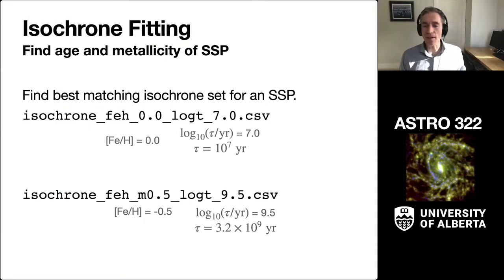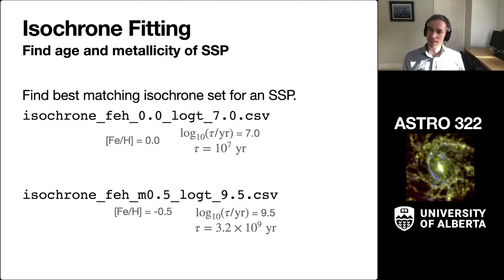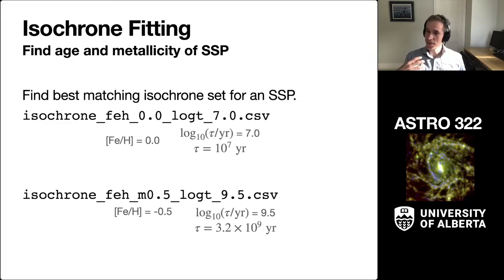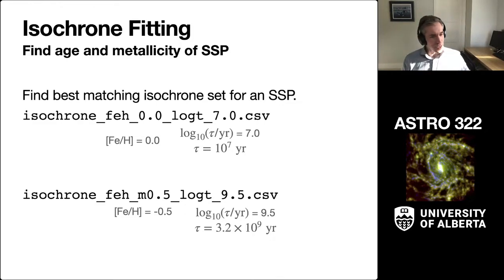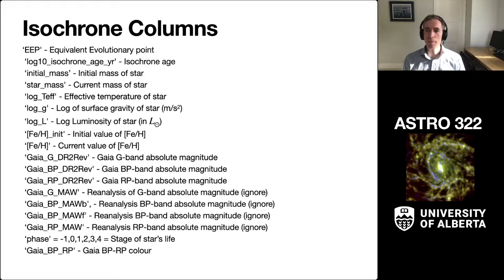The metallicity is indicated where Fe on H indicates the metallicity. Because you don't want to include hyphens in file names, a negative value is written as Fe on H M 0.5 — so that's minus 0.5. And if it's positive, it's P 0.5. Log t is never negative in these data values, so 9.5 would be 3.2 gigayears.